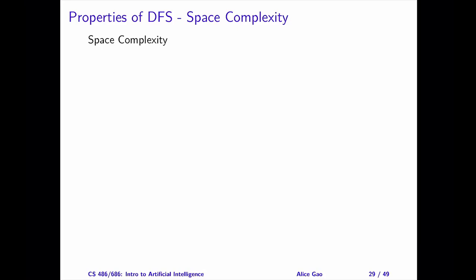Let's look at space complexity. What is the size of the frontier for DFS in the worst case? Note that it's sufficient for us to store the frontier in memory. There is no need to store the search graph or the search tree. Why is this the case?